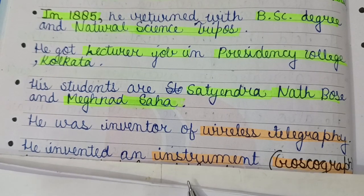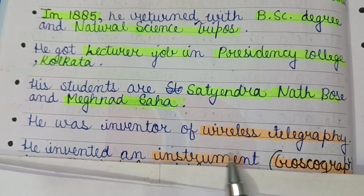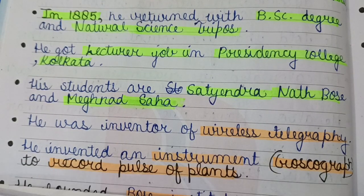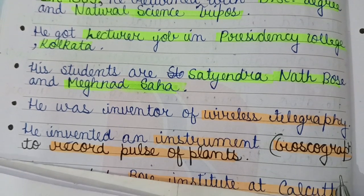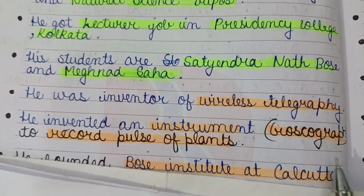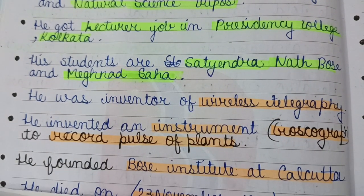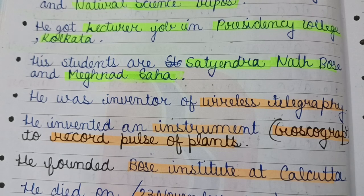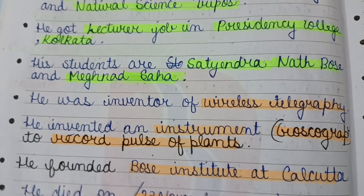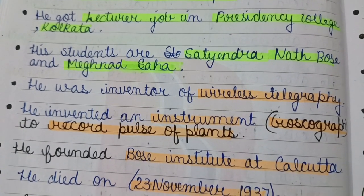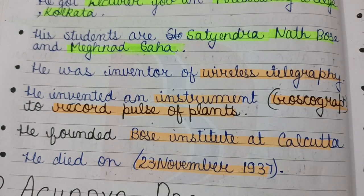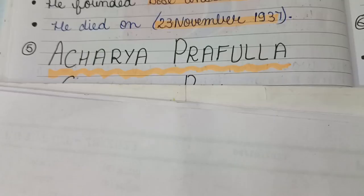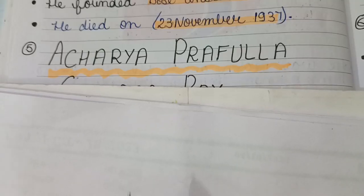He was the inventor of wireless telegraphy. He also invented an instrument called the Crescograph to record the pulse of plants. He founded the Bose Institute in Kolkata and died on 23rd November 1937.